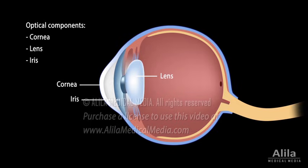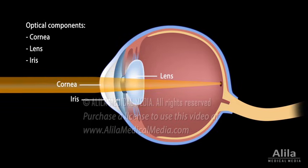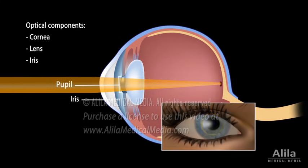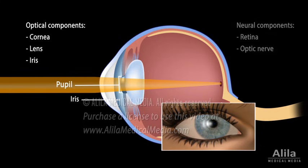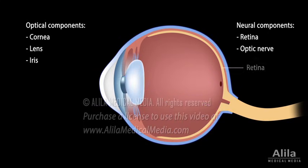The cornea and the lens refract light and focus the image on the retina. The iris acts as an aperture — it controls the amount of light that enters the eye by adjusting the size of the pupil. The neural components